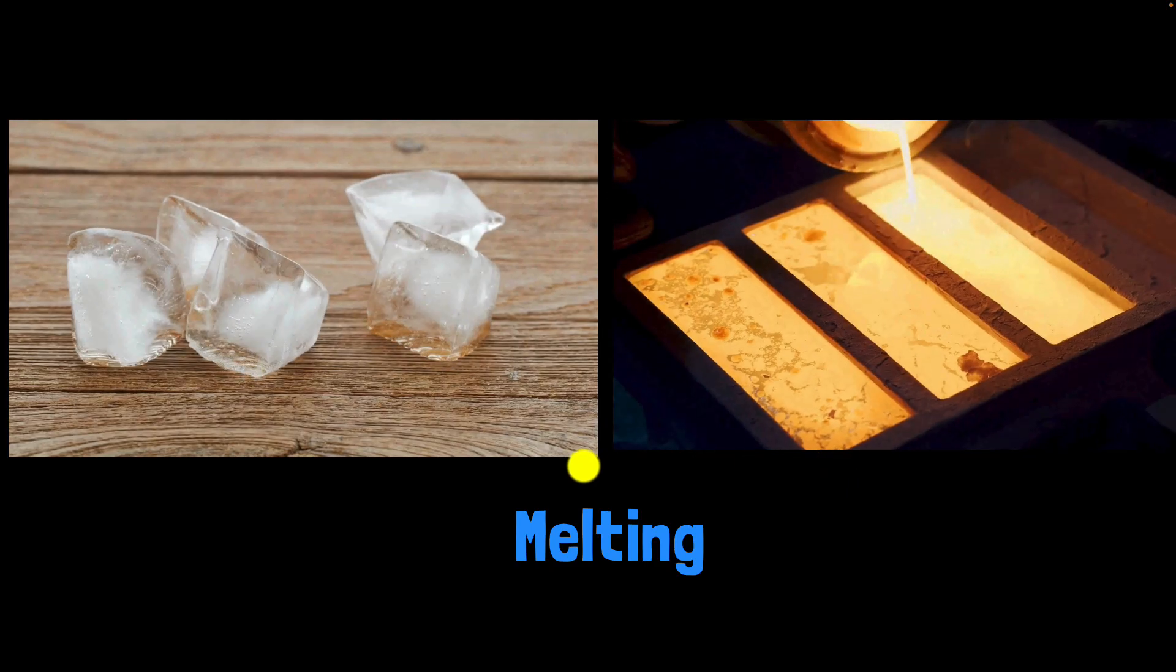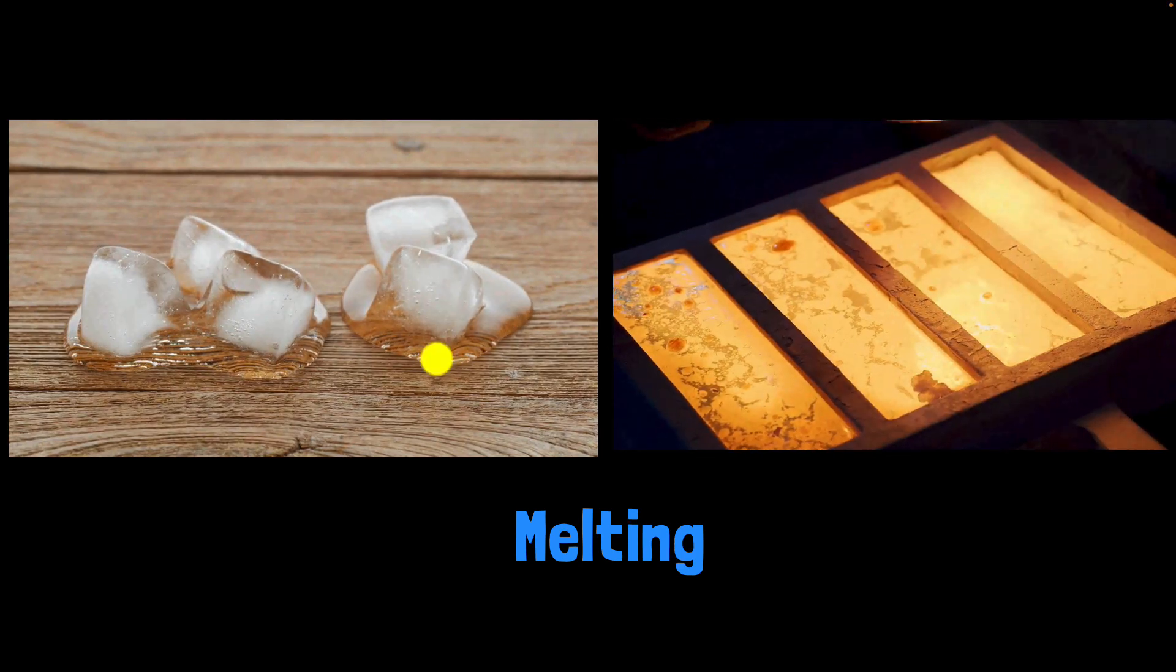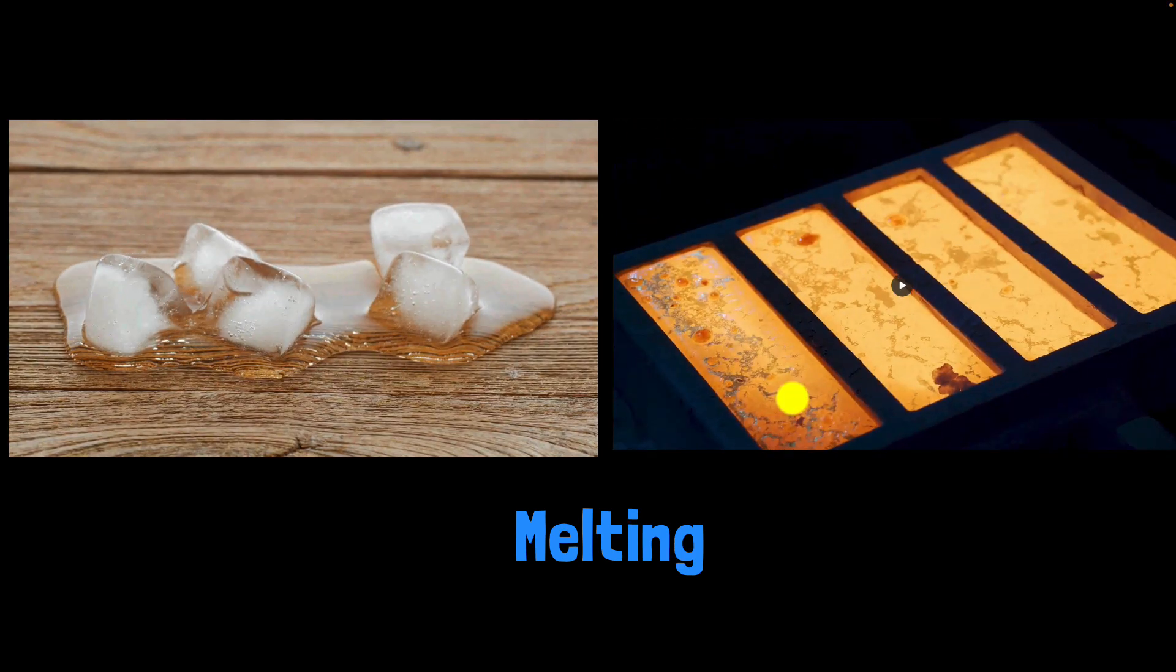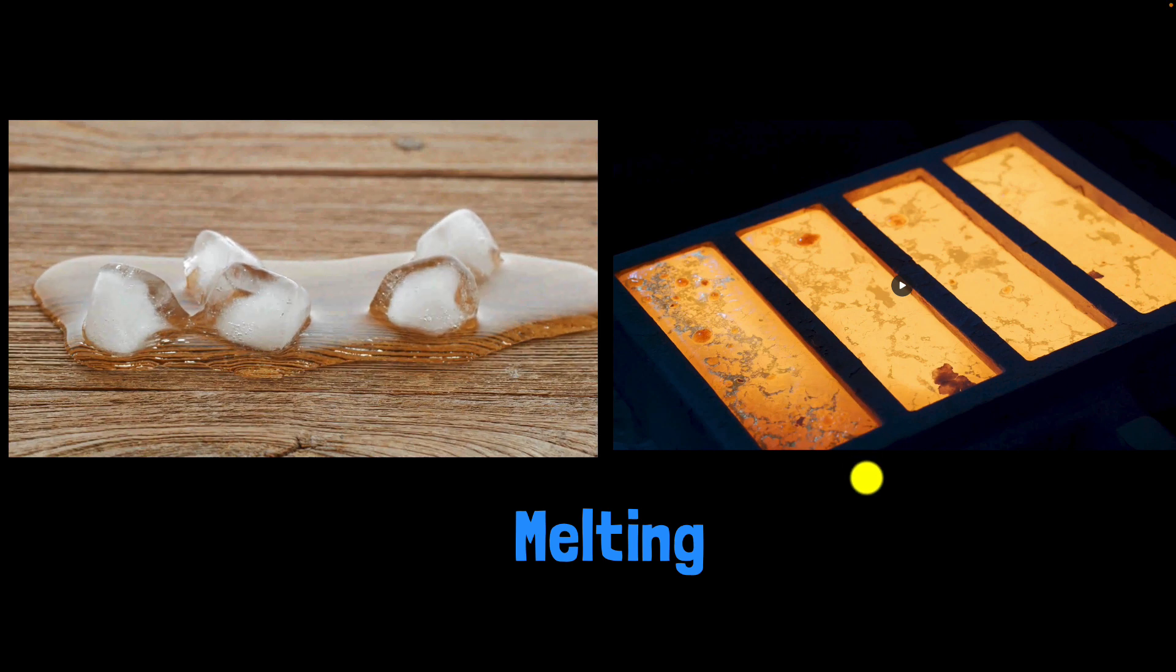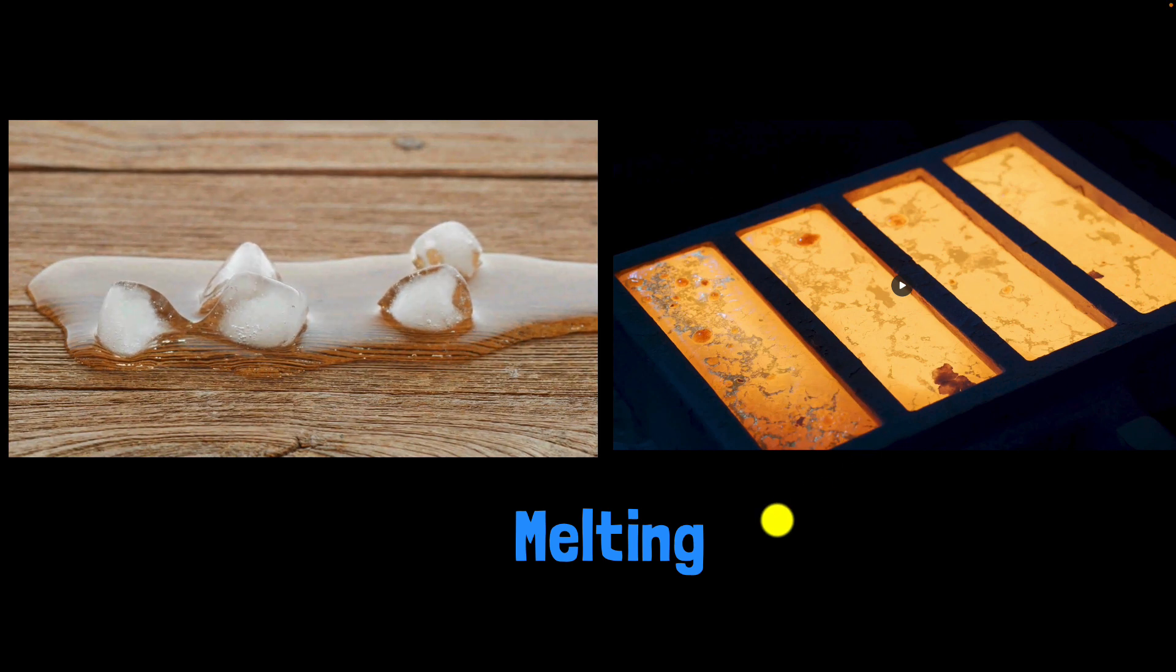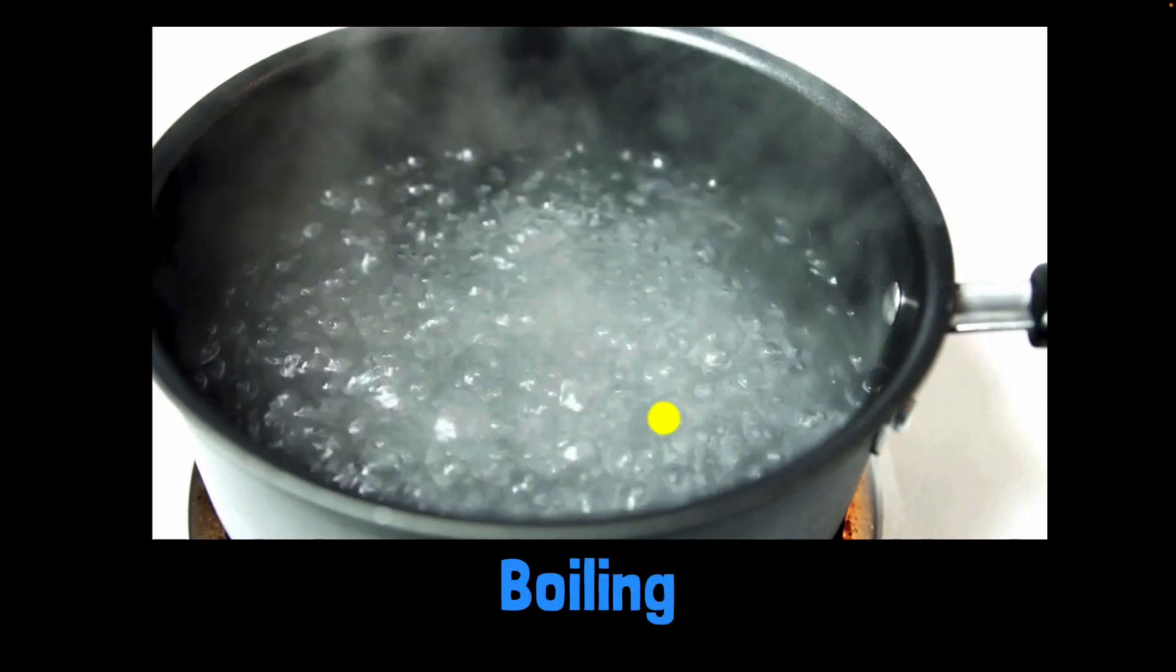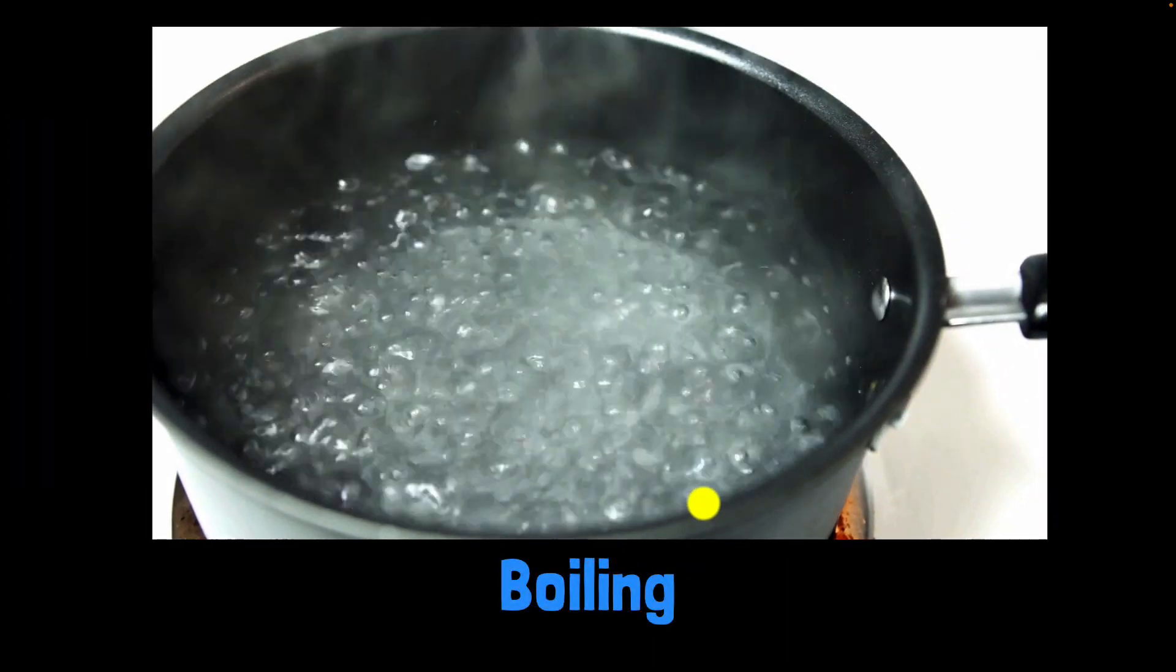Similarly, if you consider melting of ice or for that matter melting of gold, the identity does not change. This will stay H2O and the gold atoms stay gold atoms. Nothing has changed. And so melting is another example of physical change. And same would be the case with boiling. Again, the identity does not change. It's a physical change.